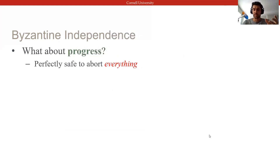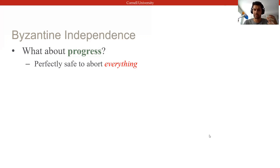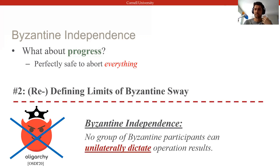This is a strong safety property to strive for, but it doesn't actually tell us anything about progress. For example, a correct Byzantine-serializable system could still systematically abort all transactions or influence the outcome of read operations. To address this notion, we introduce a second, more general BFT system property that we call Byzantine independence.